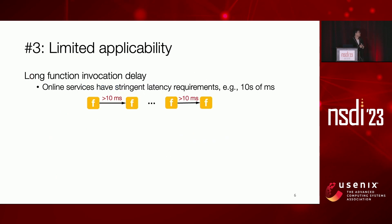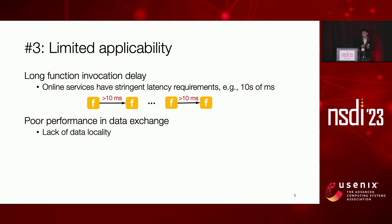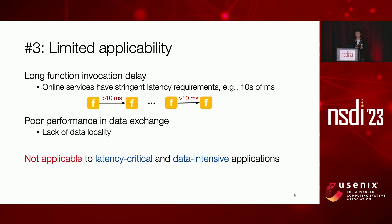Now the third limitation is limited applicability. Existing serverless functions can lead to a long invocation delay — based on our measurement, it can take over 10 milliseconds to invoke a single function instance, so latency can still build up when running a large function chain. Given that many online services have stringent latency requirements, the existing serverless platform is not suited for running those applications. In addition, today's serverless platform has poor performance while exchanging a large volume of data, mainly due to the lack of data locality. In summary, today's function orchestration is not applicable to latency-critical and data-intensive applications.